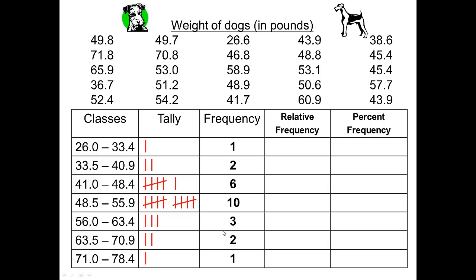Next, we are ready to fill in the relative frequency the same way we did in the previous video, not in the previous table. Note that we have a total of 25 data items in our set. The first class has a frequency of 1, which will give us 1 over 25 or 0.04.